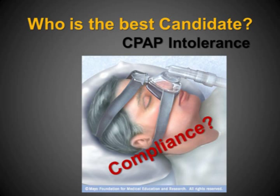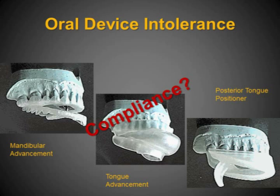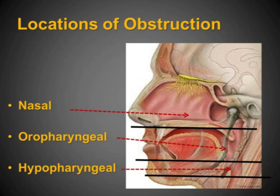Who is a good candidate for this operation? Anyone who can't tolerate CPAP or is tired of wearing the mask. Some patients have very effective treatment with CPAP but can't keep the mask on overnight. Oral devices can also be helpful, but some patients experience jaw pain, tooth pain, or changes in their bite. Compliance can be an issue, particularly with devices that try to hold the tongue forward. The locations of obstruction can be in the nose, the back of the throat and palate called the oropharynx, or just below the tongue called the hypopharynx.